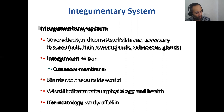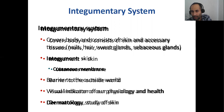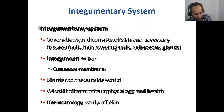The developmental origin of your integumentary system — remember the three germ layers: ectoderm, mesoderm, and endoderm. The skin and integumentary system is basically derived from the outermost layer, the ectoderm, which makes sense because ectoderm is outermost, and that's what the skin basically is.